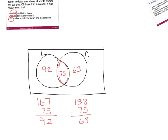Now we need to decide if any students go on the outside of the circles. We surveyed 250 people: 92 study only in the library, 75 study in both, and 63 study only in the cafeteria. If we subtract all three figures from 250, there are 20 students left over. So 20 people don't study in the library or the cafeteria — maybe their dorm room or Starbucks — but they don't belong in either set.